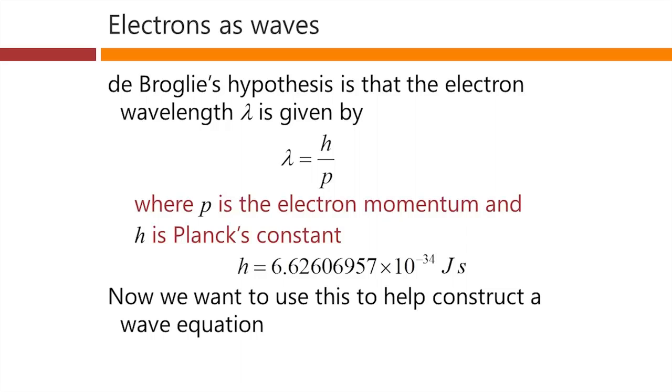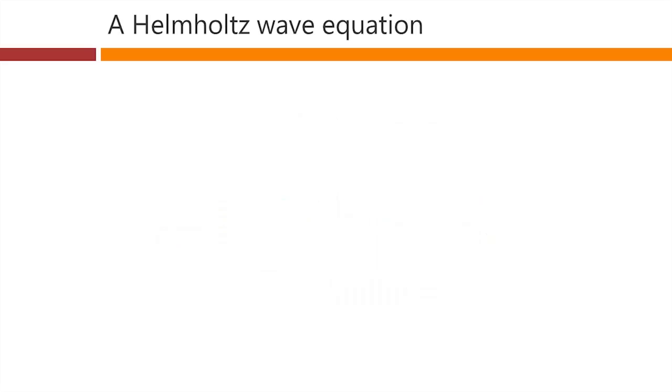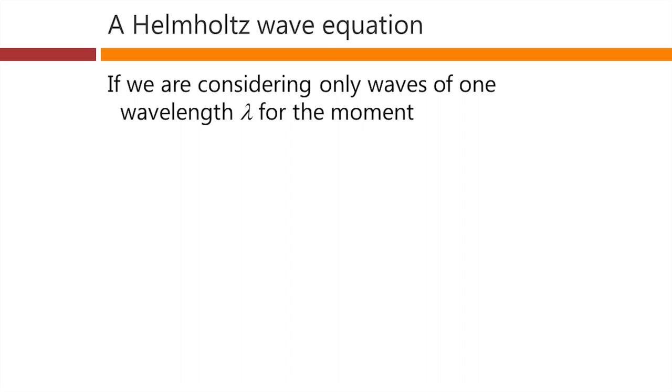Now, what we want to do is use de Broglie's hypothesis to help us construct a wave equation. So let's do that. And what we're going to do is we're going to construct a Helmholtz wave equation here. So we're going to consider waves of only one wavelength for the moment, a wavelength lambda. That is monochromatic waves.